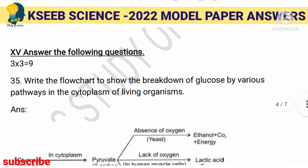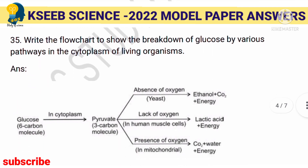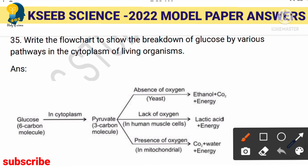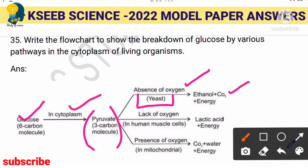The compulsory three-mark question involves the schematic representation of the breakdown of glucose. Glucose breaks down in the cytoplasm to form pyruvate. In the absence of oxygen (anaerobic, e.g., yeast), pyruvate releases ethanol, carbon dioxide, and energy. In the absence of oxygen in muscle cells, it releases lactic acid and energy. In the presence of oxygen (aerobic), it releases carbon dioxide, water, and energy — this happens in the mitochondria.